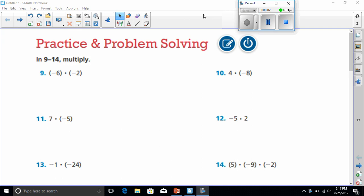All right, good evening everybody. Today we're going to be doing the practice and problem solving for multiplying integers. I will do all the odd ones, so I'll start with number 9. Number 9 says we're going to multiply negative 6 to negative 2. Before we start, let's go over roughly all the rules for multiplying integers.